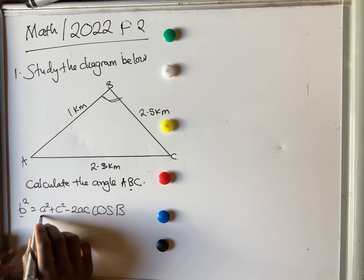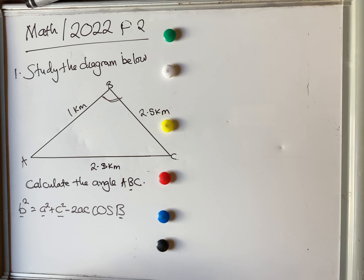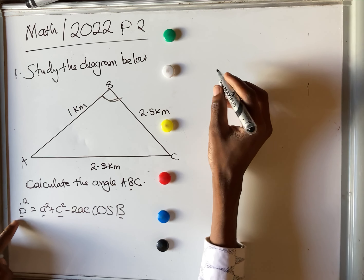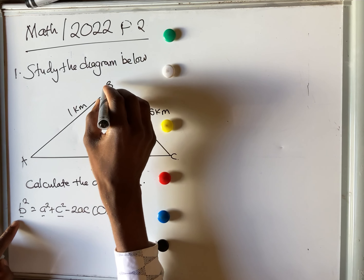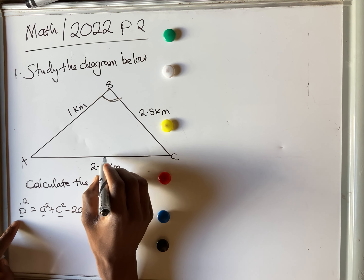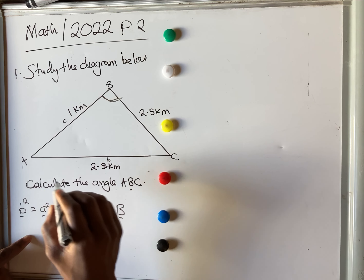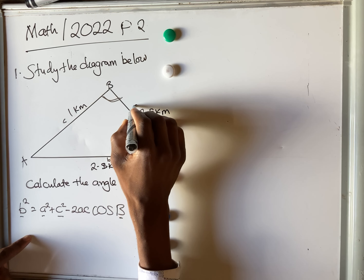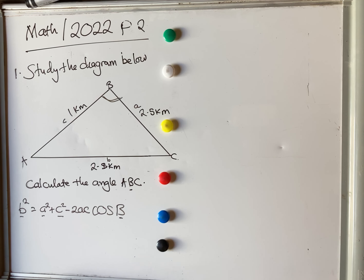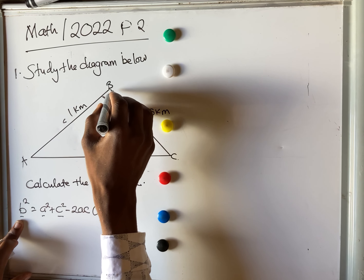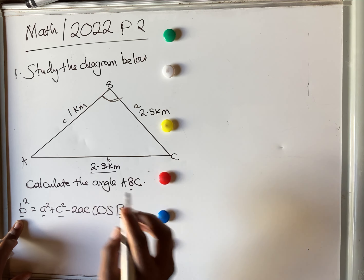We have side b, side a, and side c, and what we're looking for is cos B. Capital letter B represents the angle, so the opposite side is represented by the small letter b, and similarly for c and a. In this case, when I say b (the small letter), you get the opposite side of angle B, which is 2.8.